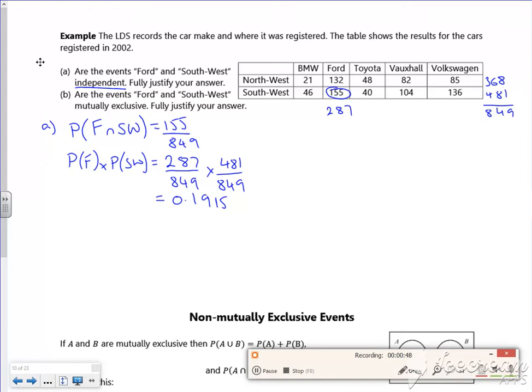Now if you check what that is on your calculator, I've got my calculator to do it. So 155 over 849 is 0.183, not 0.1816.